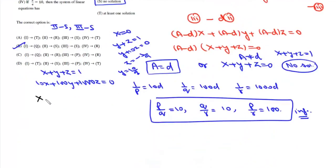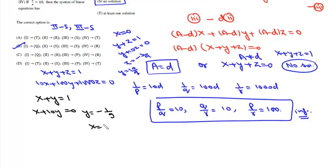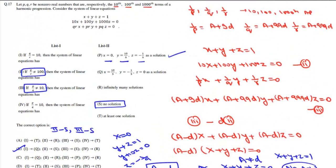Putting Z = 0: X + Y = 1 and X + 10Y = 0. This gives Y = -1/9 and X = 10/9, so another solution is (10/9, -1/9, 0). The system therefore has infinitely many solutions, with two of them being (10/9, -1/9, 0) and (0, 10/9, -1/9).